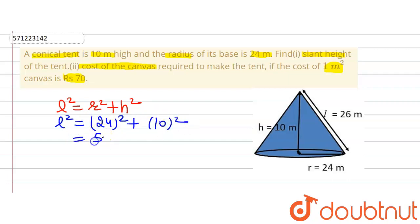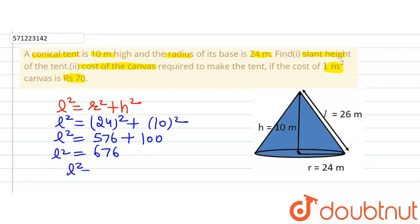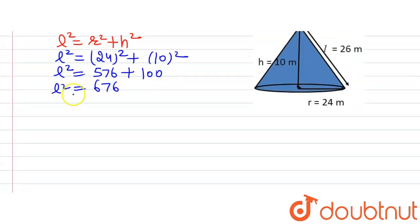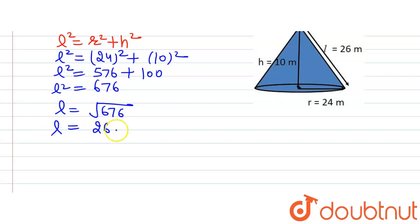24 squared gives us 576, plus 10 squared gives us 100, which equals 676. So slant height squared is equal to 676. Taking the square root of both sides, slant height l equals √676, which equals 26 meters. This is the answer to the first part of the question.